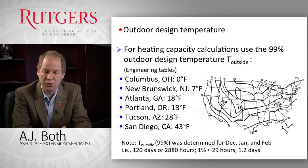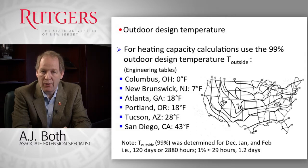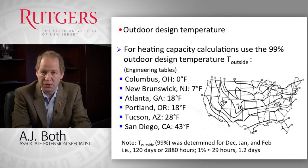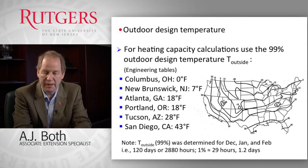When temperatures drop below the 99% design temperature, growers have two options: they can install additional heating capacity inside the greenhouse, or — more typically — they allow the inside temperature to drop slightly because the heating system cannot maintain the set point. Since this only happens for a few hours per year, it is often not an issue. If it does become an issue, additional capacity such as kerosene heaters can be used.